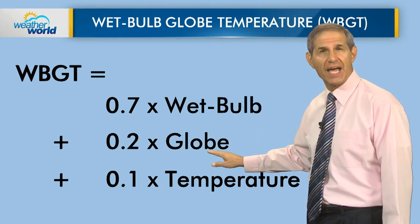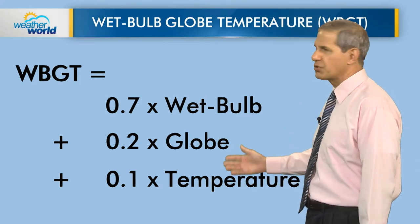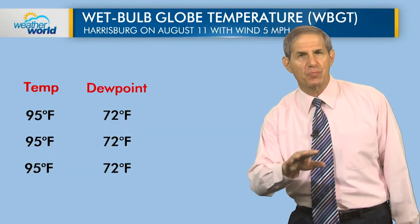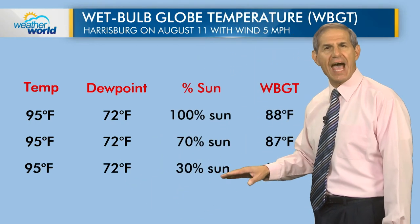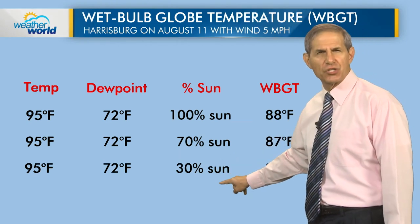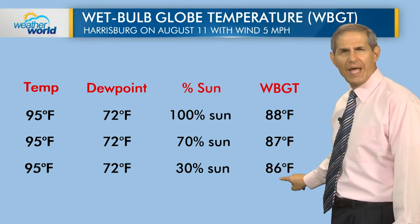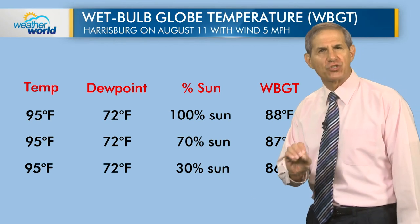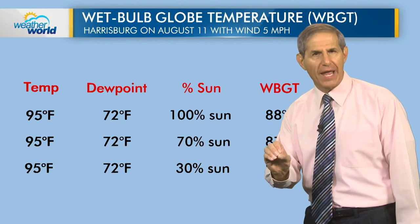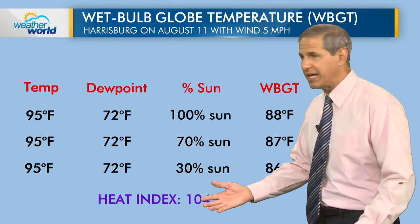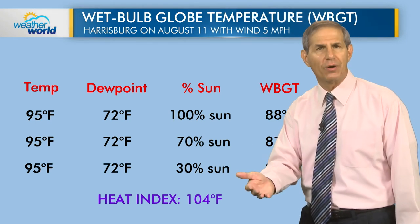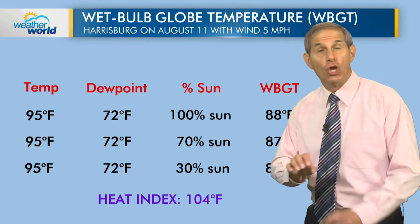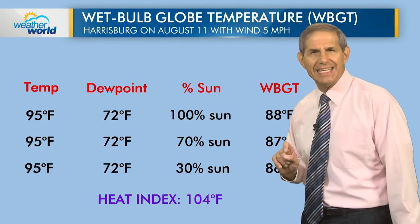The globe temperature captures the impact of sunshine, taking into account clouds and sun angle, which depends on where you live. For an example using Harrisburg today, assuming a wind of five miles per hour, with 95°F temperature and 72°F dew point close to today's highest values — depending on how sunny it is, from 100% down to 30% — the wet bulb globe temperature ranges from 88 to 86. Those values mean that if you work or exercise one hour in direct sun, you should take a 30-minute break. The heat index for these conditions doesn't depend on the amount of sun — it's 104°F, a much scarier number. And I think that's a big reason the WBGT hasn't caught on more: the values that are dangerous are typically in the 85–95 range, which just doesn't sound as ominous as the high heat index values we're used to.